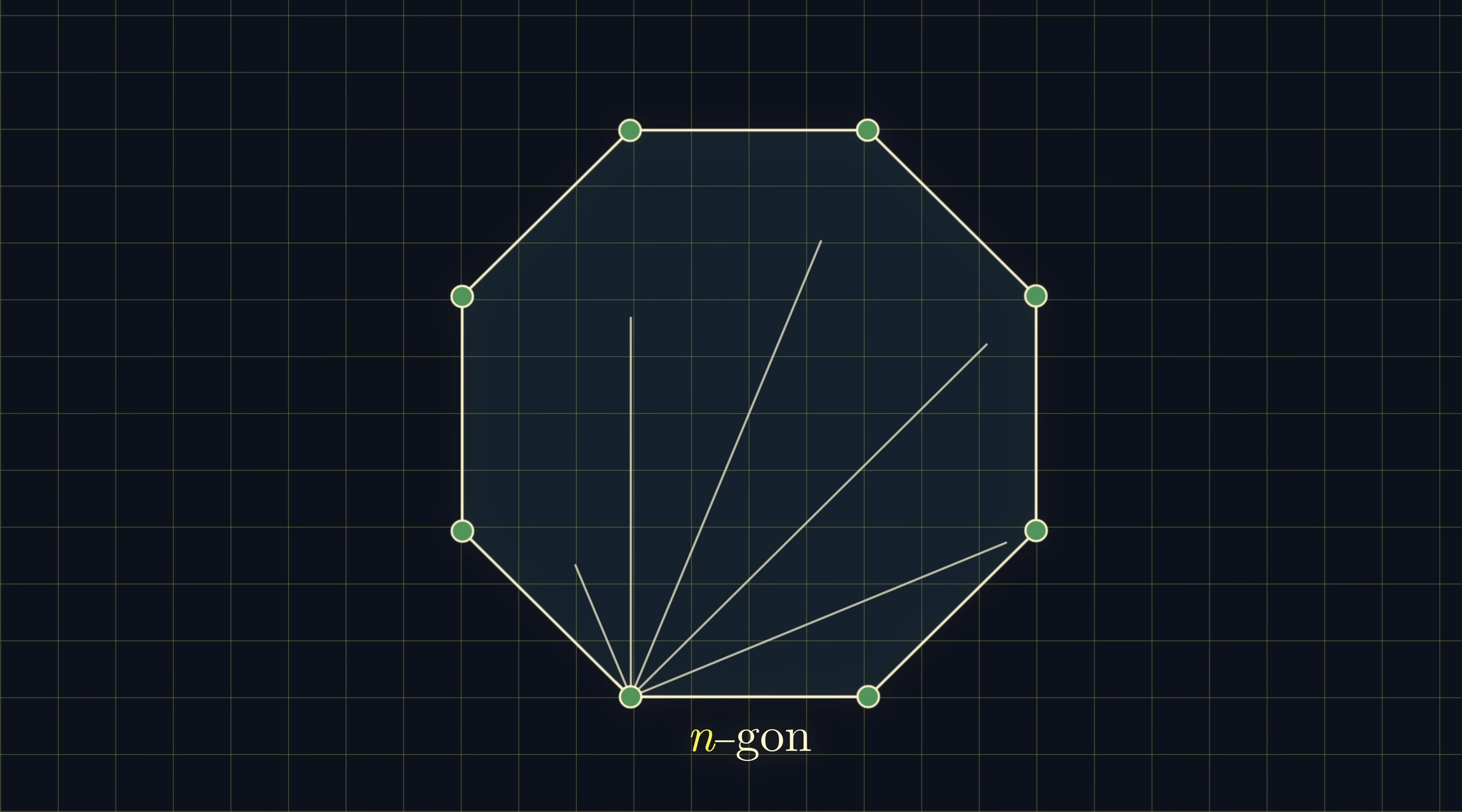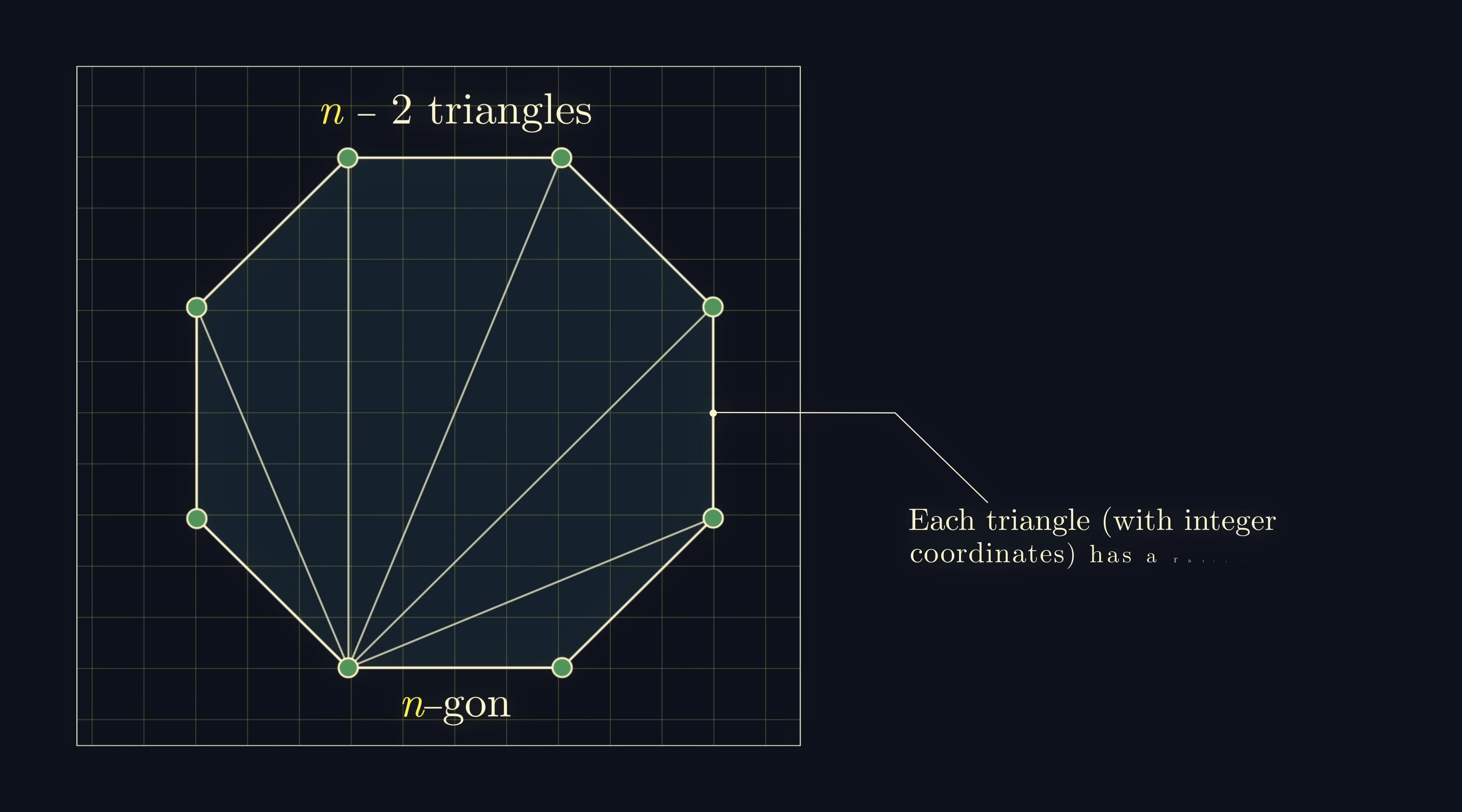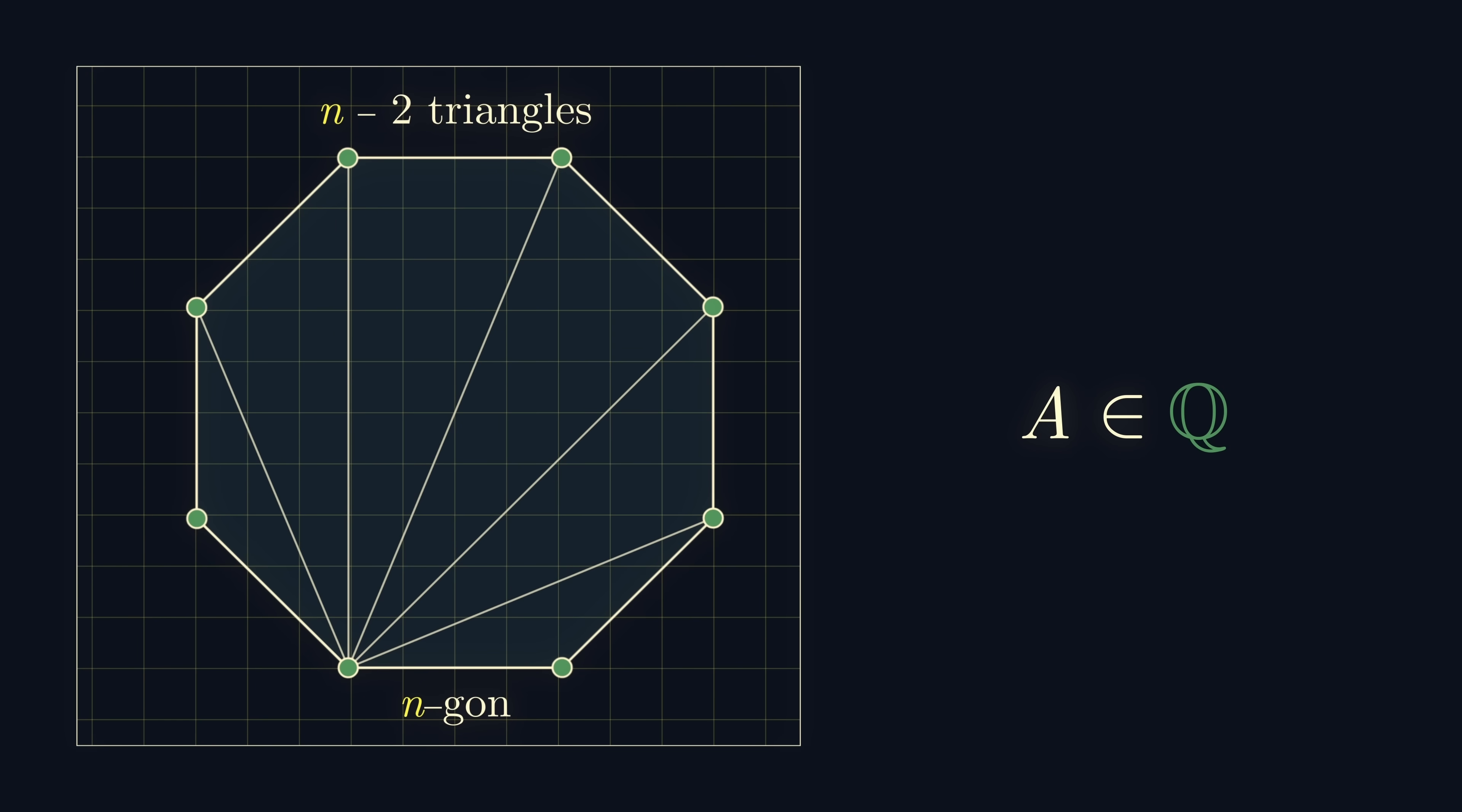We can break down any regular n-gon into n-2 triangles, and as we just showed, the area of each of these triangles must be rational, so the area of our n-gon must also be rational. We again want to find another expression for the area using the fact that the polygon is regular. Whilst finding the area of any regular polygon isn't so straightforward, finding the area of a triangle is. So, let's break up the polygon into triangles.